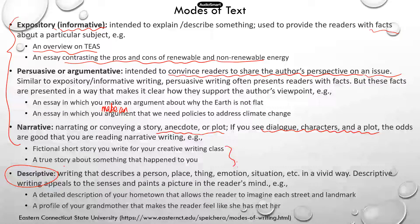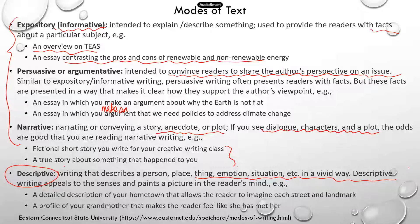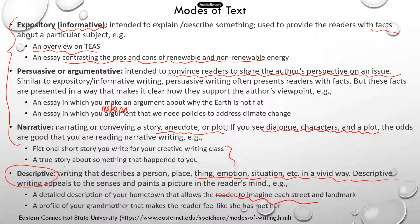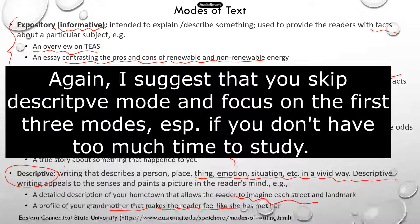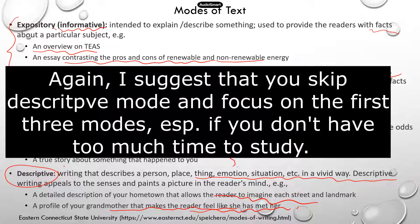Descriptive is a piece of writing that describes a person, a place, a thing, emotion, or situation in a very vivid way. For example, a detailed description of your hometown that allows the reader to imagine what each street or landmark looks like. Or a profile of your grandmother that makes the readers feel that they have met her. So it's a very vivid description — that's descriptive.